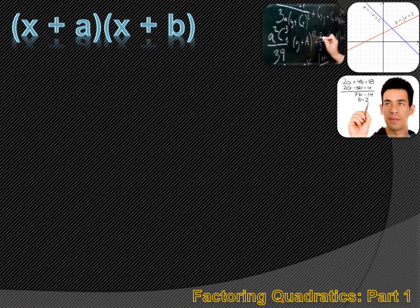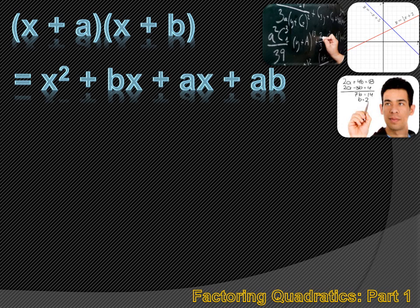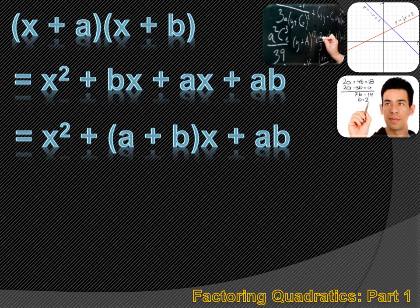Binomials are the components of quadratics. Here's two binomials: x plus a and x plus b. And if I get the product of these two binomials, I end up with x squared plus bx plus ax plus ab.